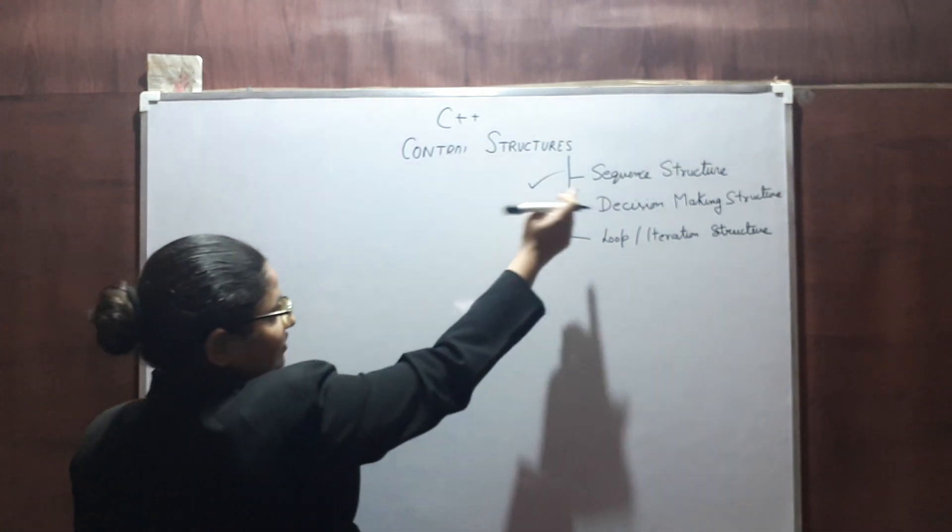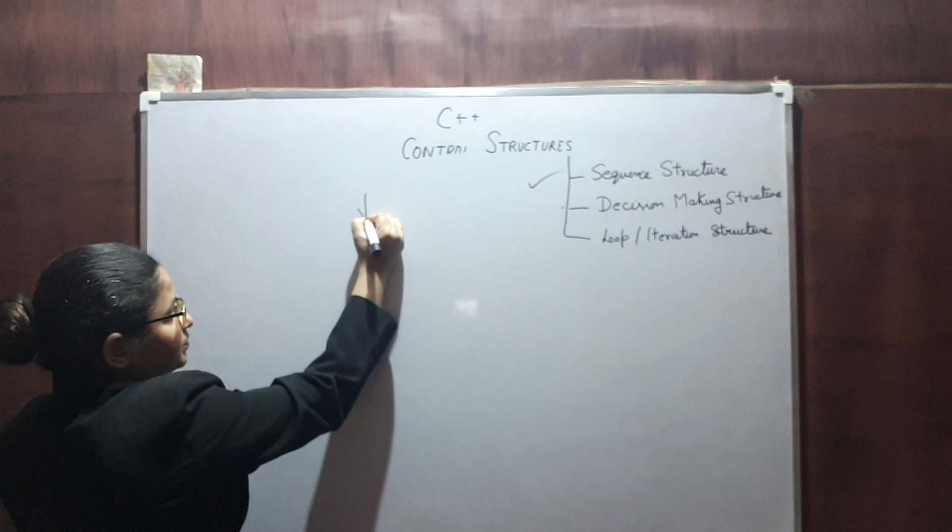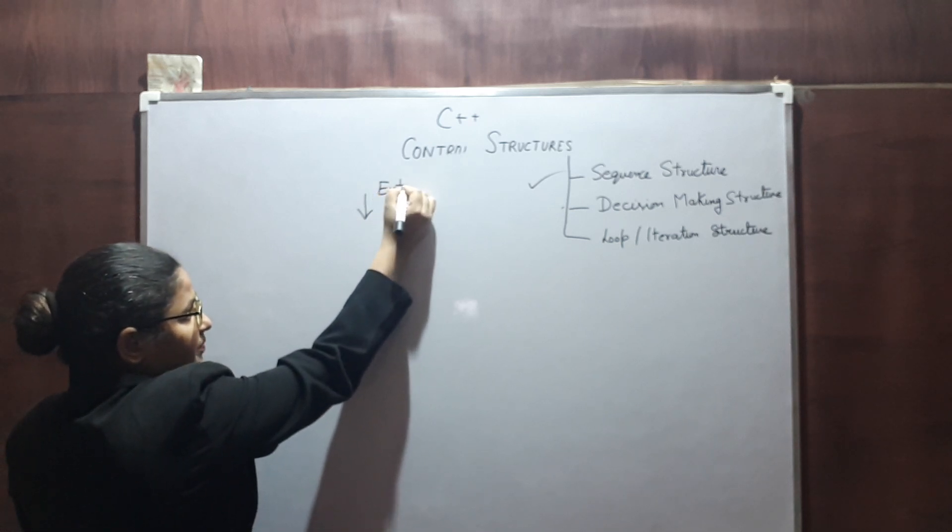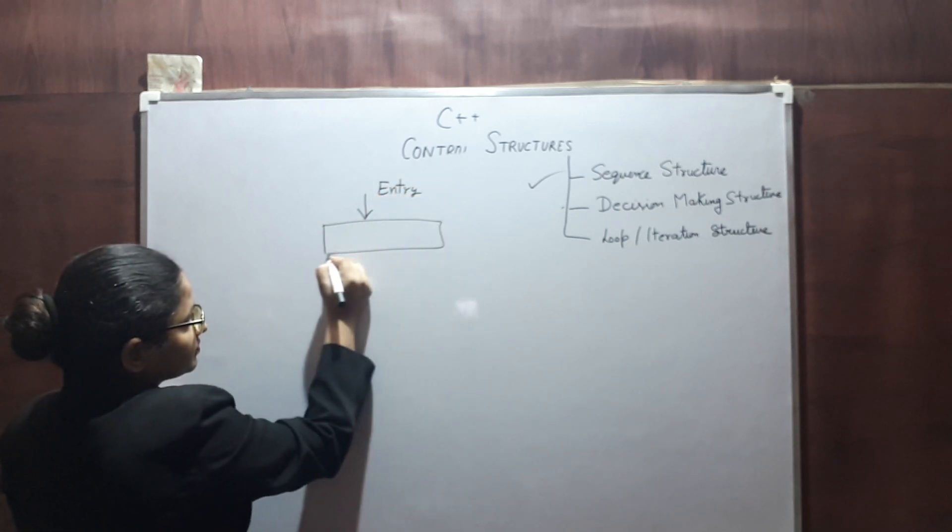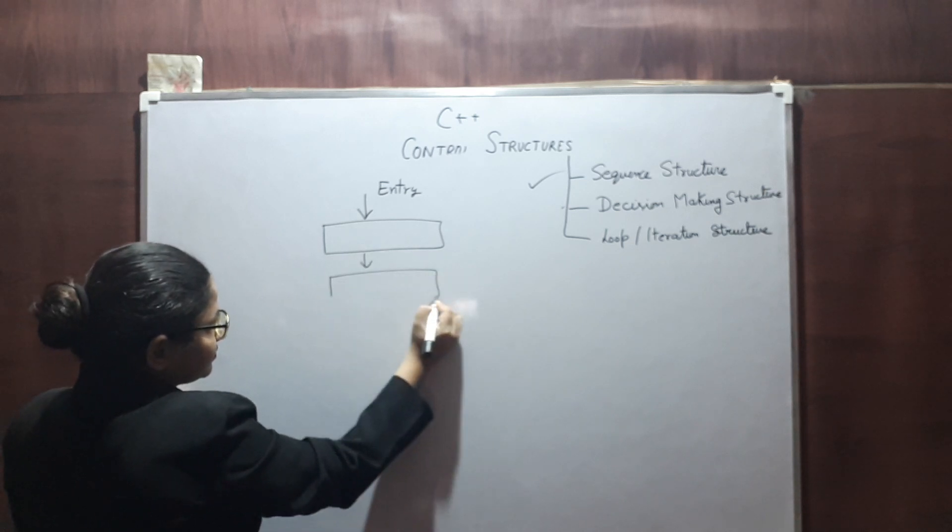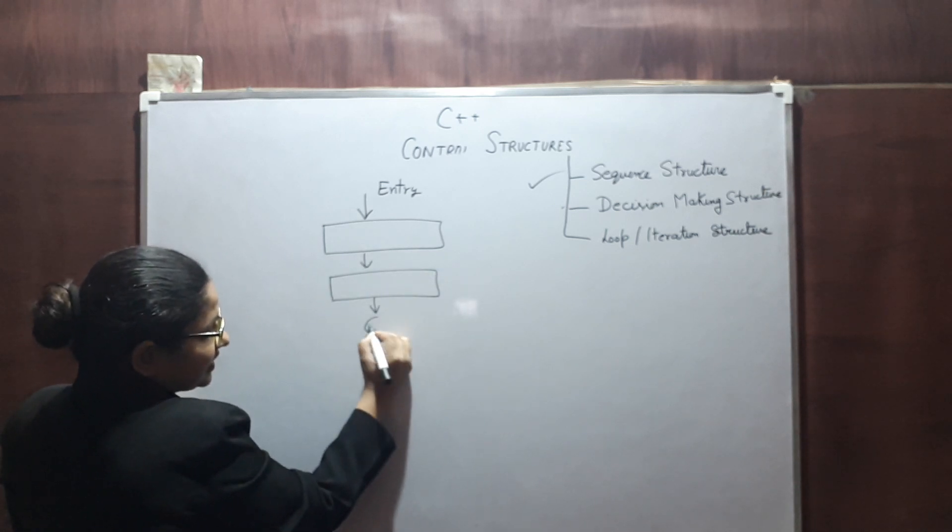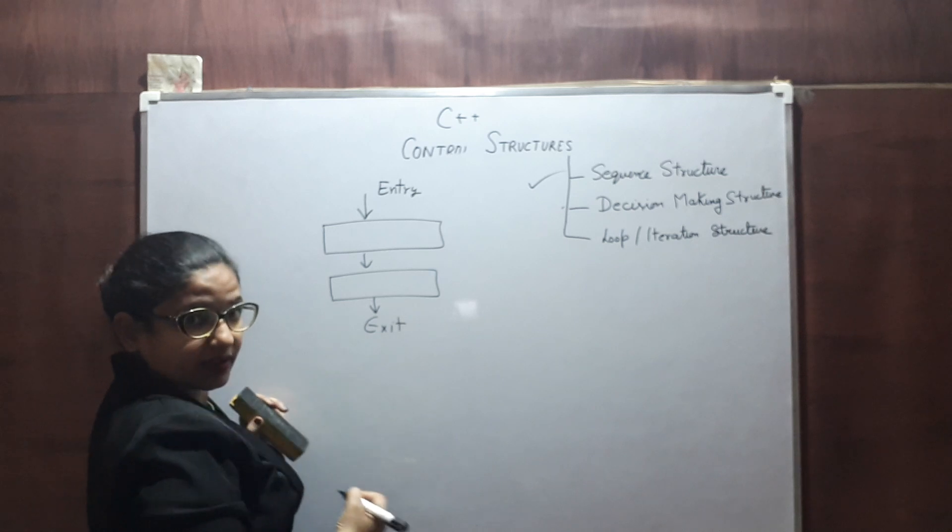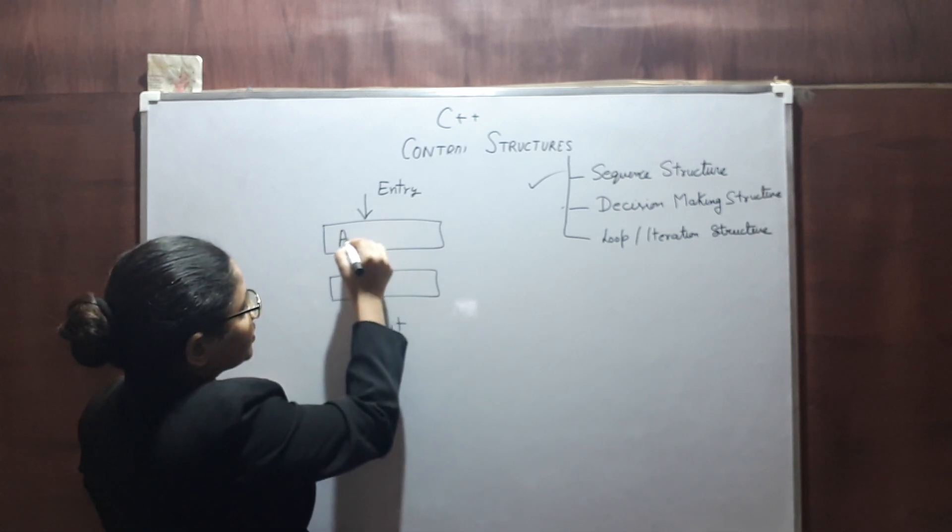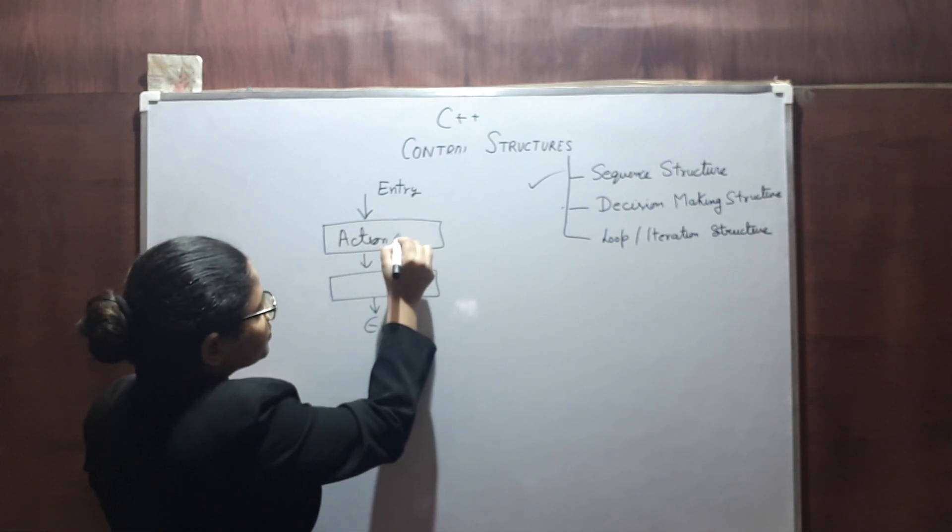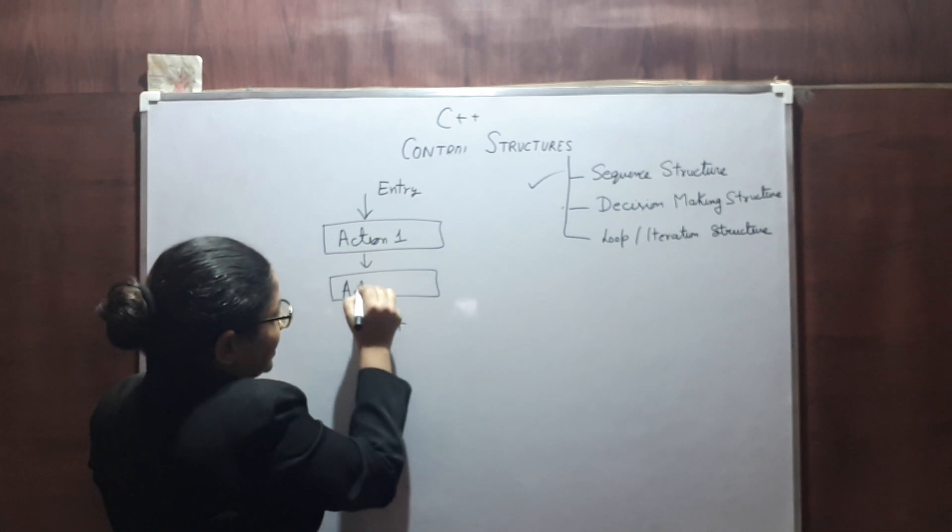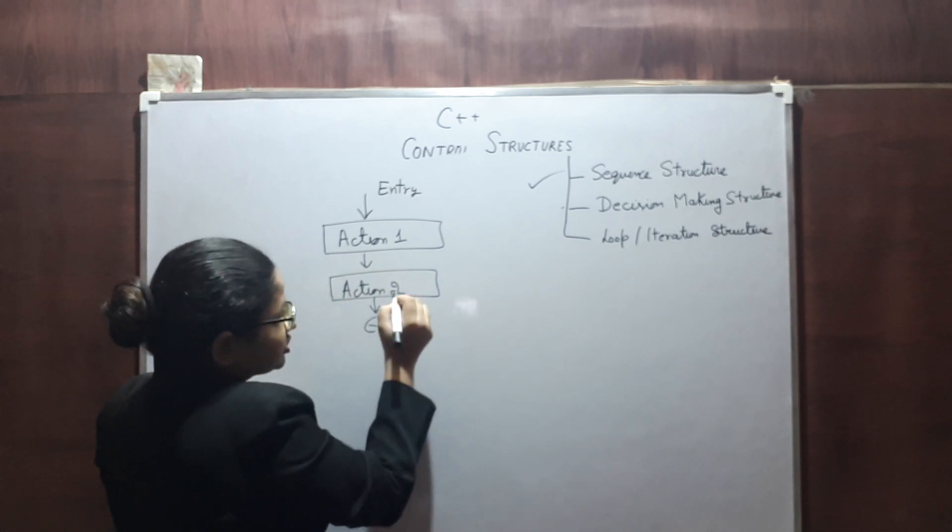First we will see sequence structure. Suppose we have one entry point and one exit point. And in this program I am supposed to perform two actions: Action 1 and Action 2.